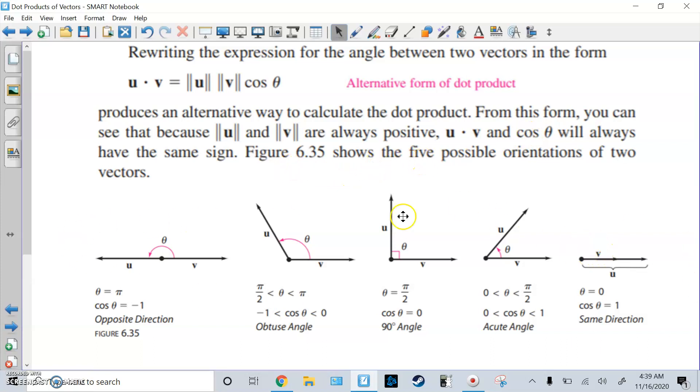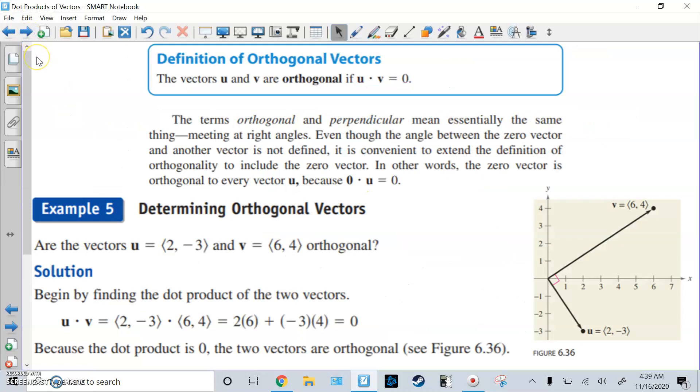Alright, so here's the five different combinations. And we have what we call orthogonal vectors. So the definition of vectors, U and V are orthogonal if the dot product is zero. Orthogonal just means perpendicular, right angles. Alright, so even though the angle between the zero vector and the zero vector isn't defined, it's convenient to extend the definition of orthogonality to include the zero vector. So in other words, the zero vector is orthogonal to every other vector, because zero times that vector is still zero.